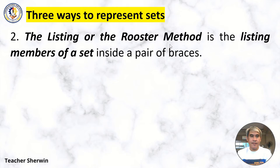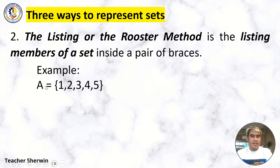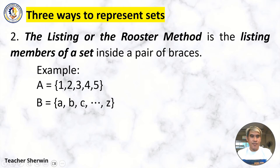The listing or roster method is the listing of members of a set inside a pair of braces. For example, Set A is equal to the set of {1, 2, 3, 4, 5}. Set B contains {A, B, C, ...} where the three dots represent letters from B up to Y and Z — so it is a continuous sequence of letters.